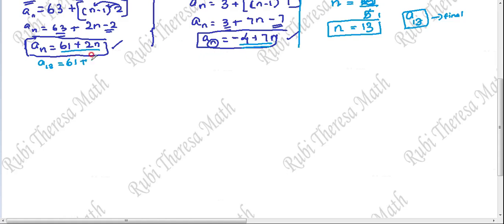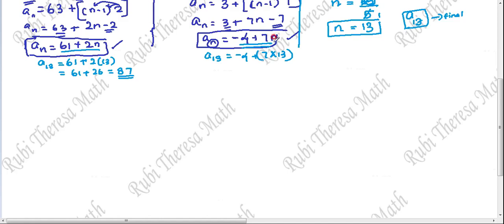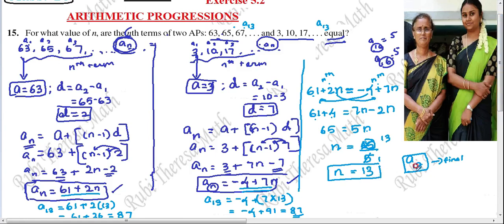Just for verification: for the first sequence, A13 equals 61 plus 2 into 13, which is 61 plus 26 equals 87. For the second sequence, A13 equals minus 4 plus 7 into 13. 7 into 10 is 70, 7 threes are 21, so 70 plus 21 is 91. Then 91 minus 4 equals 87. Both give 87, confirming the answer is correct. The final answer is A13.